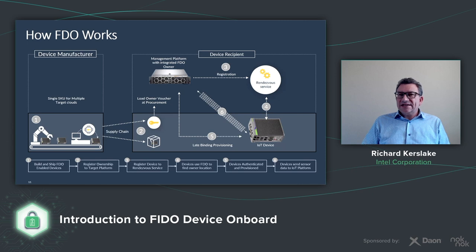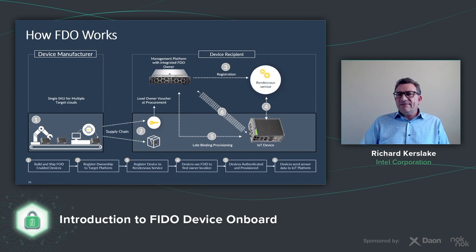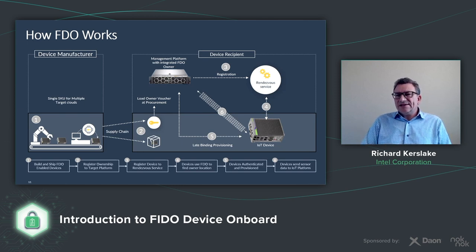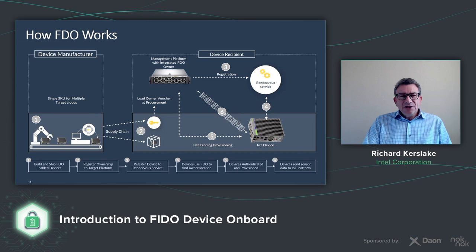By doing that, the two of them can mutually authenticate and we can now secure a connection. After that, it's really up to you what you do. You can download the credentials for the device so that you can onboard it to the platform. Maybe you download an agent — if you're going to CSP vendor A and you want to put their cloud agent, you can do that. There's a lot of flexibility. Once you've done that, FDO has done its job. At that point it can basically shut down and stay dormant for the rest of the life of the product, or until someone decides to sell it or use it somewhere else in the facility.